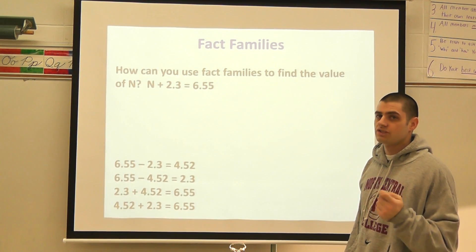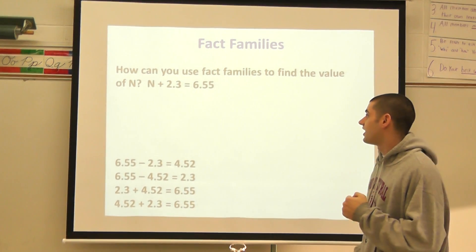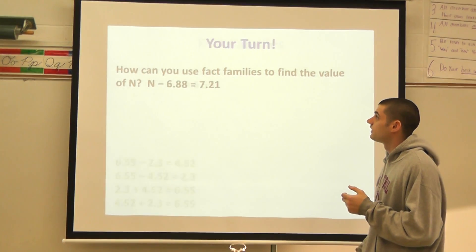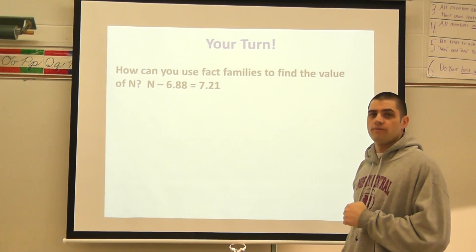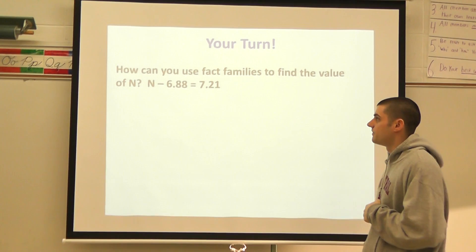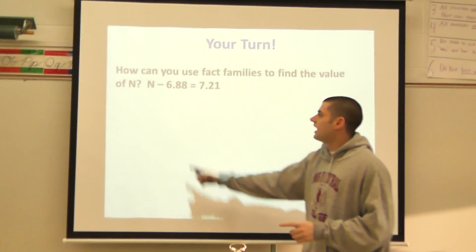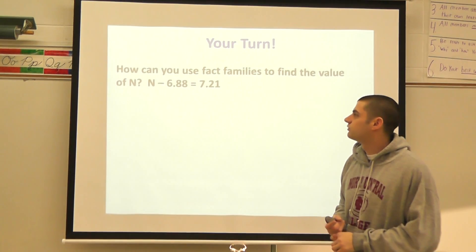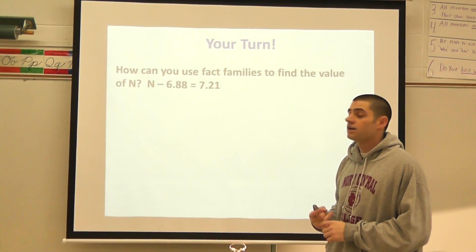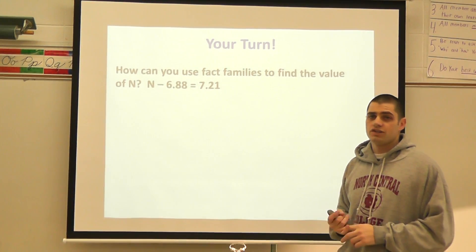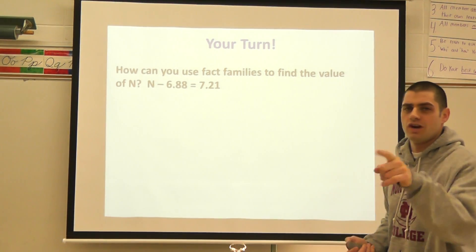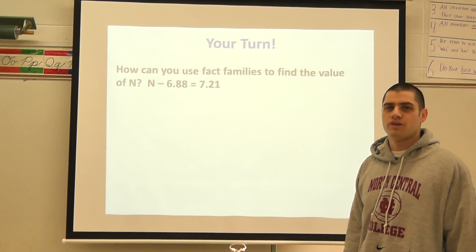And there you go, you just did a little bit of algebra, which is a little bit of a preview of what comes up in the next unit, which is variables and patterns. All right, your turn. I've thrown a little curveball with a subtraction problem at you, but it says how can you use fact families to find the value of N: N minus 6.88 equals 7.21. Go ahead, I know you got your stuff ready to go—your paper, pencil, calculators. Go ahead and pause the video, we'll see what you come up with.